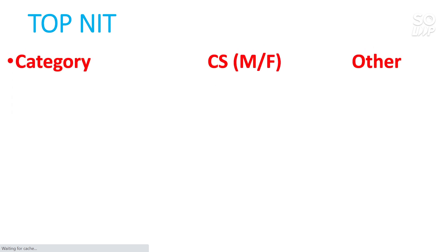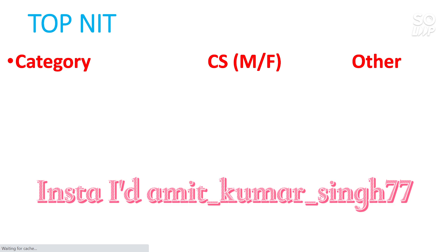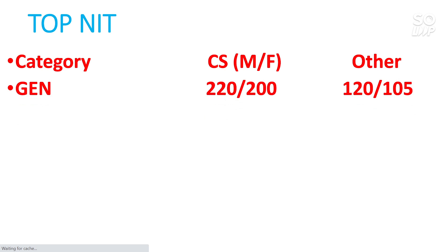For top NITs, here is what marks you need for CS and 'other' branch — where 'other' means the lowest possible branch available at that NIT. For General category, male students need around 220 marks and female students need around 200 marks to get CS at a top NIT. For other branches at a top NIT, you need around 120 marks for male and 105 marks for female. These marks may vary by 10 higher or lower based on the difficulty level of your shift.